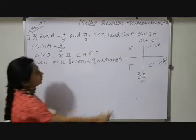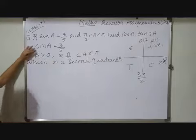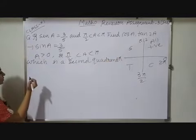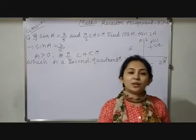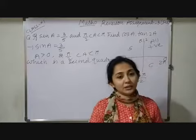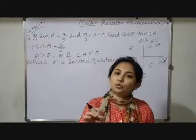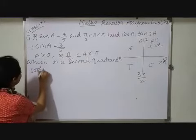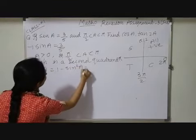And in the second quadrant, as we are knowing, sin is positive, so here the value will remain as it is. Now cos A, here we will find out. How to find out cos A? So children, you have studied the identity: sin²A + cos²A = 1. So in place of that, here I can write down cos²A = 1 - sin²A. So that same here I am applying: cos²A = 1 - sin²A.